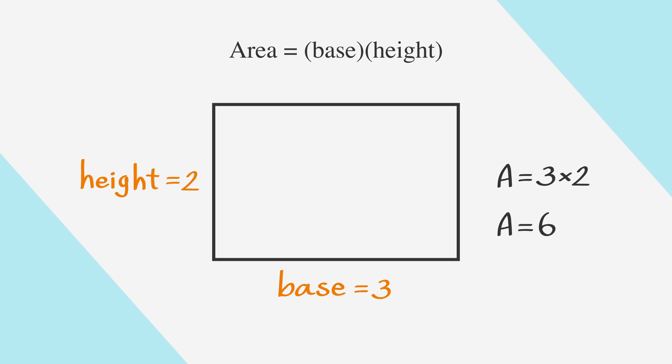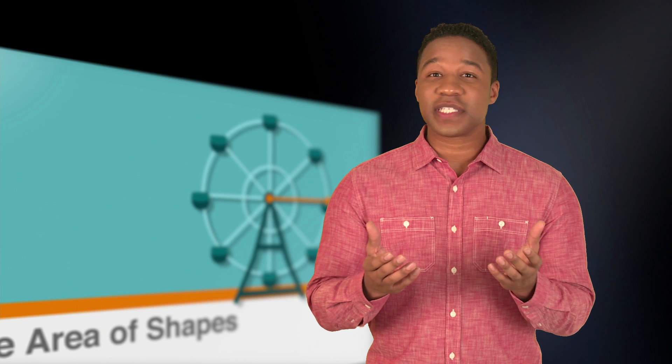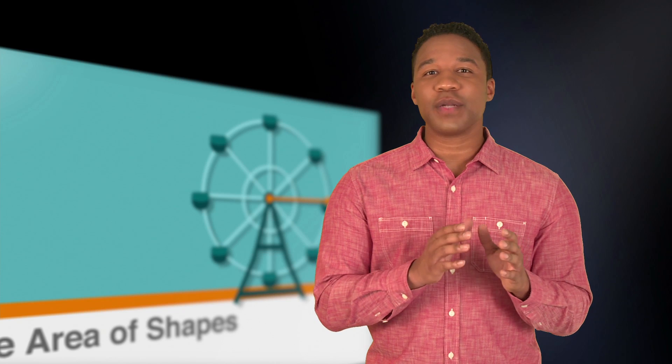You can find the area of a square the same way, although the base and the height will always be the same. Instead of area equals base times height, we can say that area is equal to side squared, since the sides are all equal.